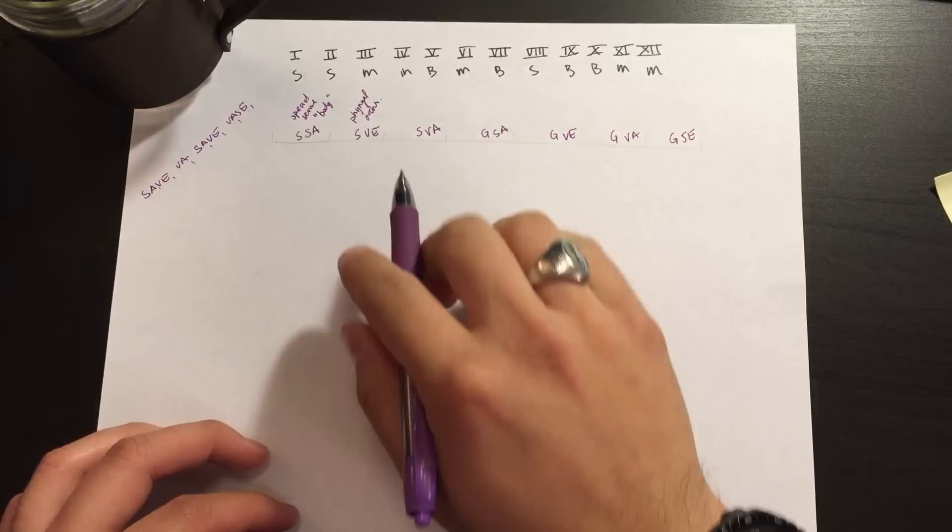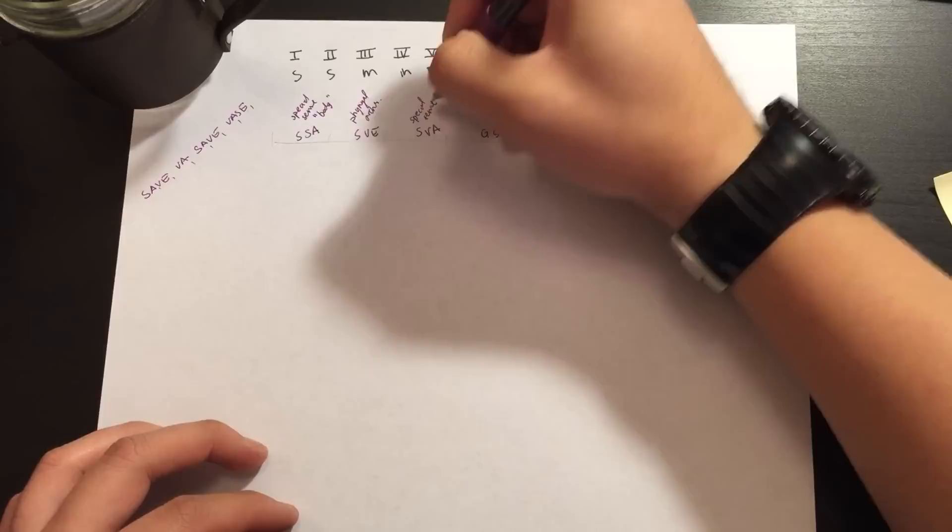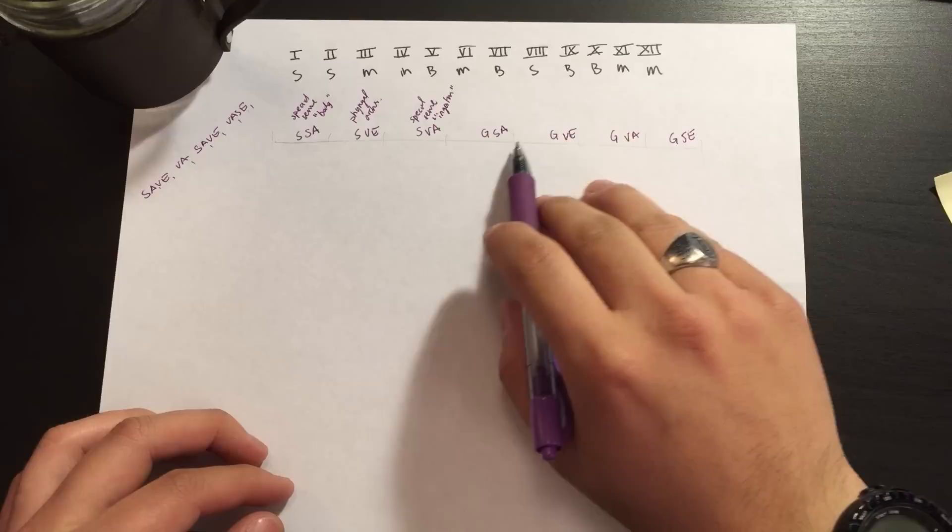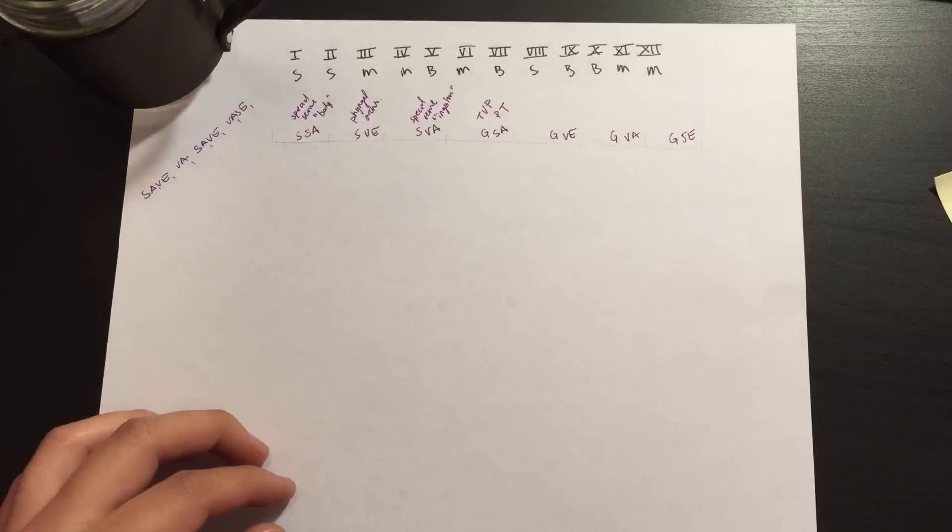The special visceral afferents are the special senses that are involved with ingestion. So this is our smell and our taste. Now the general somatic afferents, this is our touch, vibration, proprioception, pain, and temperature.